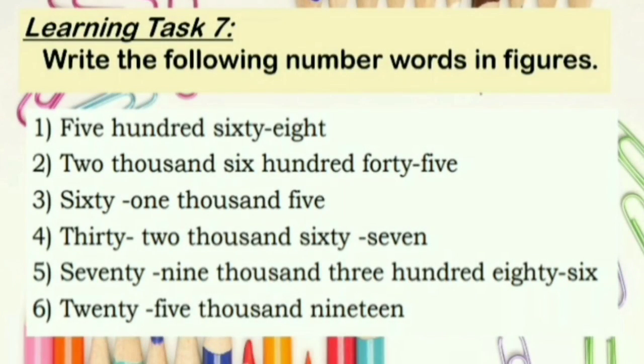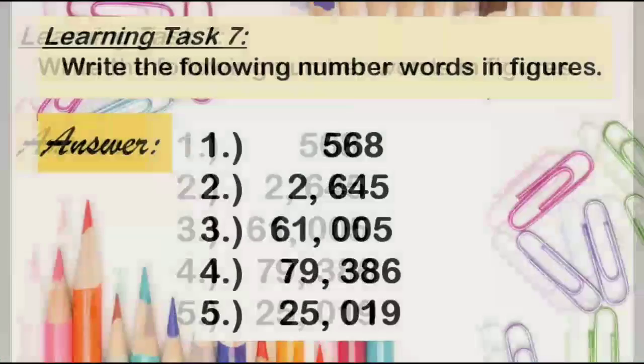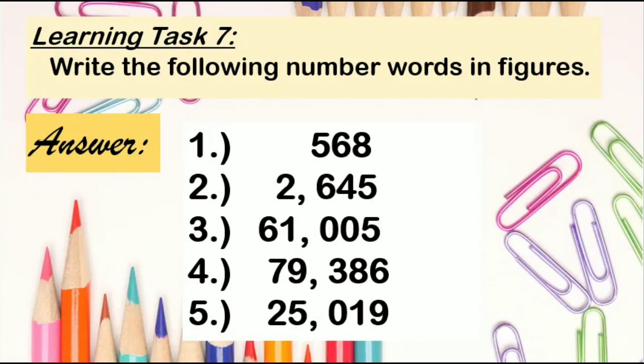For Learning Task 7, you are going to write the following number words in figures. The first one is 568. Then we have 2,645. Number 3 is 61,005. Number 4 is 79,386. And number 5 is 25,019.